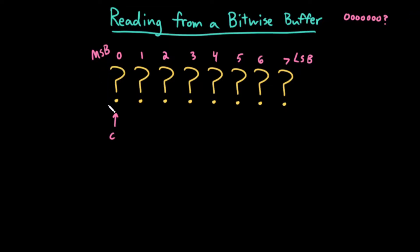Let's say my buffer is called buff. I would do buff bit shifted to the right. If c is zero, I want to shift it seven over.